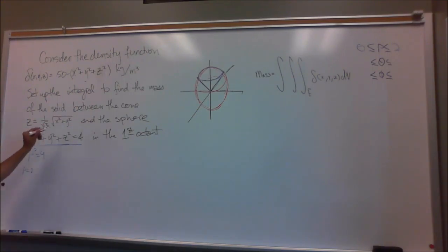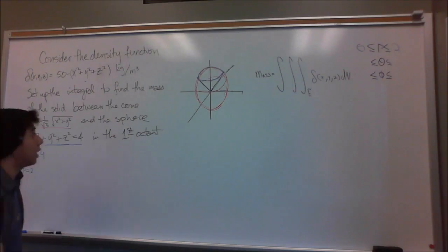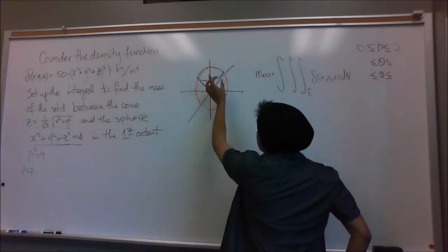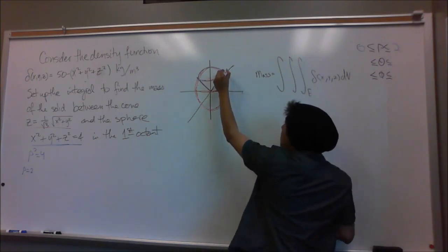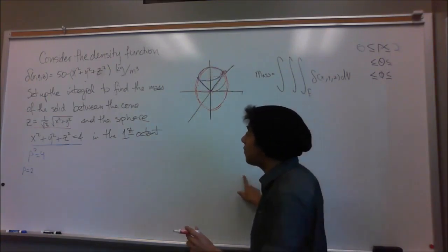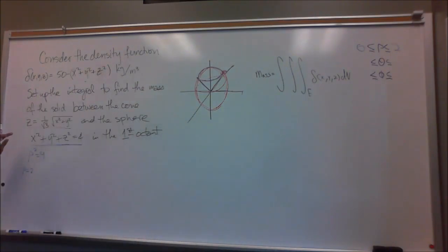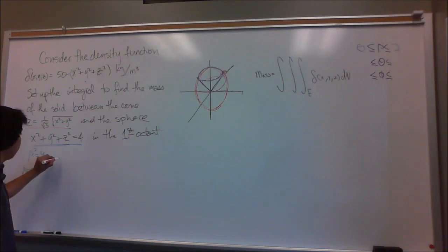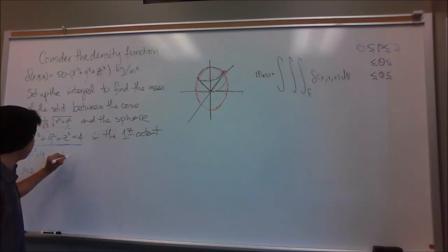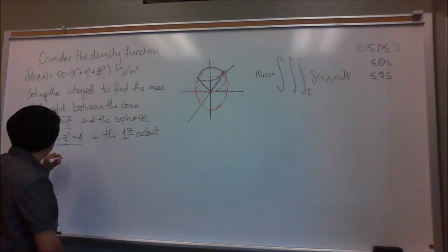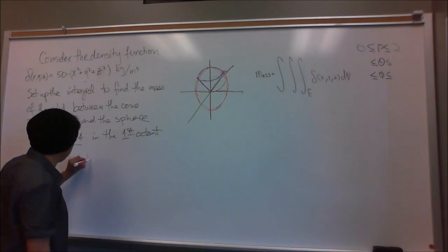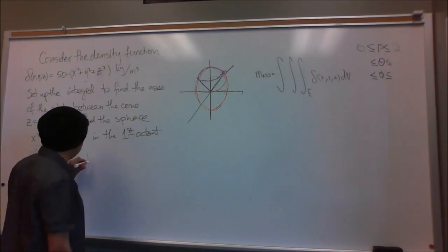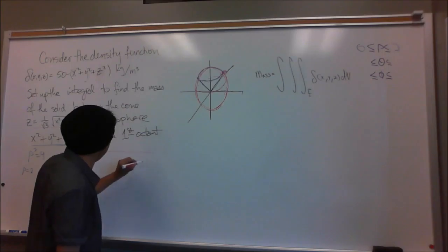To find phi, we look at where the cone intersects the sphere — right around here. To do that we have to convert the equation for the cone into spherical coordinates. So z equals rho cosine of phi, and that equals 1 over the square root of 3 times the square root of our big function.